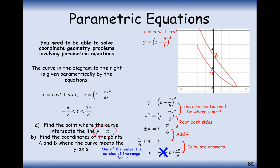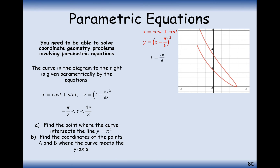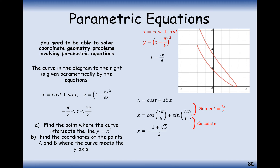One answer is outside the range for t: minus 5π/6 is beyond the upper limit of minus π/2, so we eliminate it. Taking only t equals 7π/6 and substituting into x equals cos t plus sin t gives minus one plus root three, all over two. So the coordinate is ((-1 + √3)/2, π²).